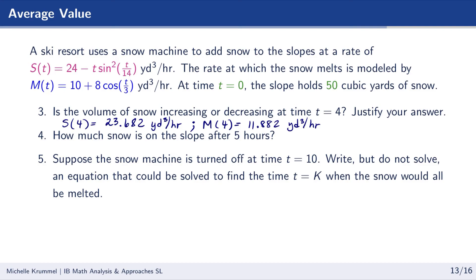How much snow is on the slope after five hours? We account for the initial 50 cubic yards, plus the snow added during that time, minus the snow that melted. This gives us 50 plus the integral from 0 to 5 of s of t dt minus the integral from 0 to 5 of m of t dt, which equals 95.335 cubic yards.